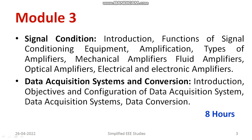We are going to explain what are the major functions of signal conditioning devices and what are the different types of amplifiers. An amplifier is one example of signal conditioning — different types such as mechanical amplifiers, fluid amplifiers, optical amplifiers, and electrical and electronic amplifiers. You might have heard about the operational amplifier (op-amp), which is an example of a signal conditioning device. We are going to discuss in detail about different types of signal conditioning devices, and we will also have a brief discussion on data acquisition systems.